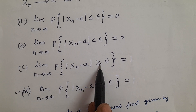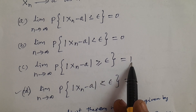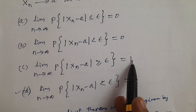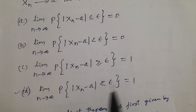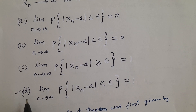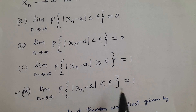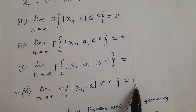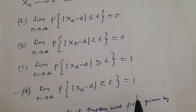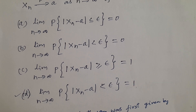If the difference is greater than or equal to epsilon, the probability should be 0 — therefore that option is wrong. The answer is D: limit n tends to infinity, probability of |Xn − A| < ε is equal to 1. Then Xn is said to be convergent in probability.